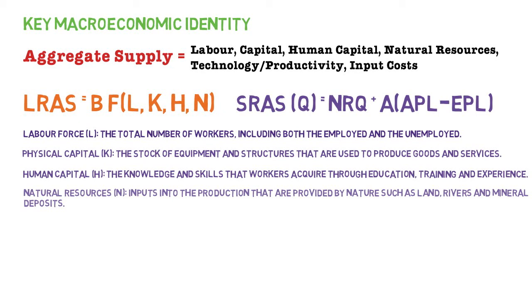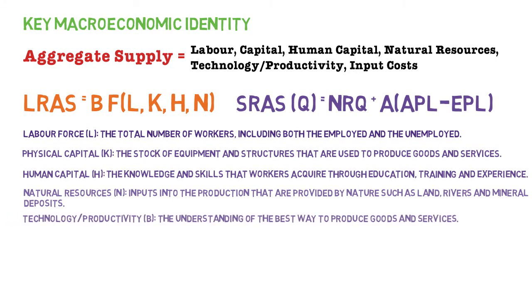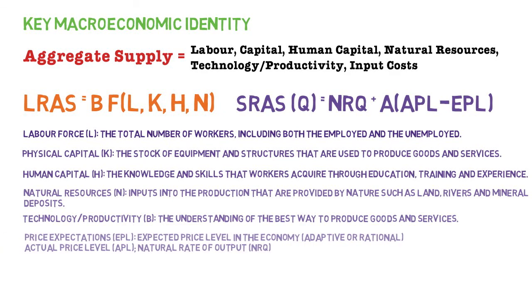Natural resources refer to inputs into production provided by nature, such as land, rivers, mineral deposits, oil, and things of this nature. Technology and productivity is the understanding of the best way to produce goods and services — how the factors of production are brought together and how efficiently they are used. We also have price expectations: the expected price level (EPL), the actual price level (APL), and the natural rate of output (NRQ), which are all related when it comes to shifting the supply curve.